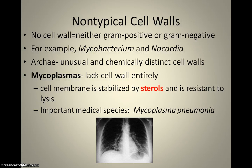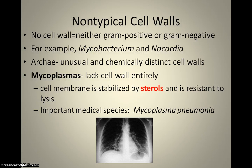Mycoplasma is a group of bacteria that lacks cell walls entirely. To compensate for the rigid structural support and prevention of movement that a cell wall normally provides, they have extra sterols embedded within their cell membrane to stabilize them and make them resistant to movement of water and therefore lysis, which is cell rupture. An important medical species is Mycoplasma pneumoniae, one cause of pneumonia that results from this mycoplasma group.